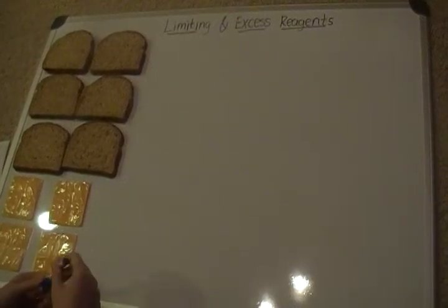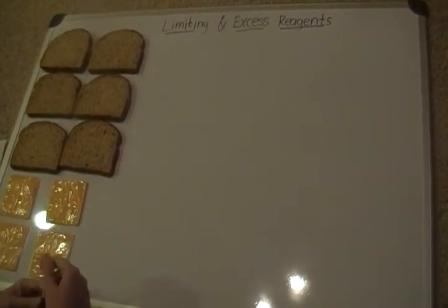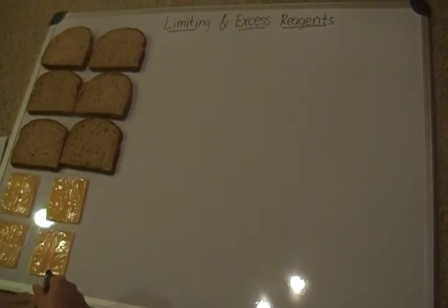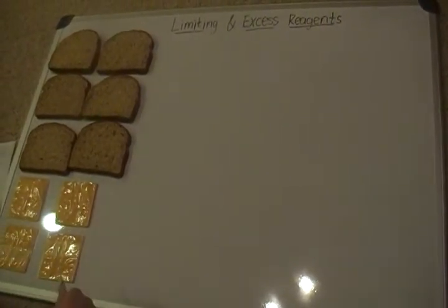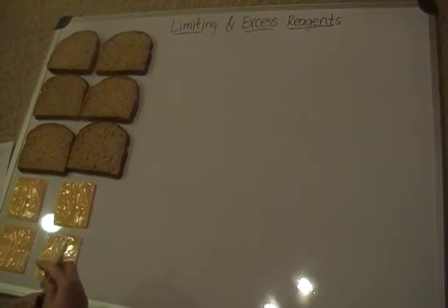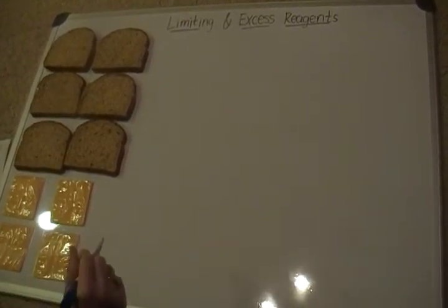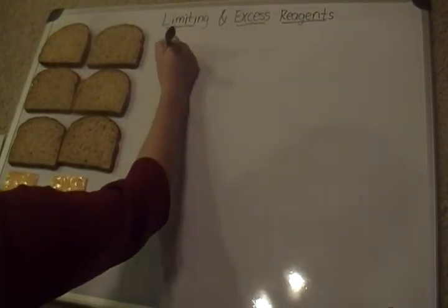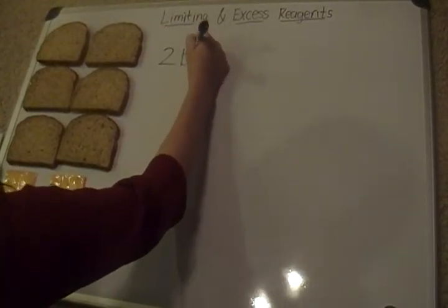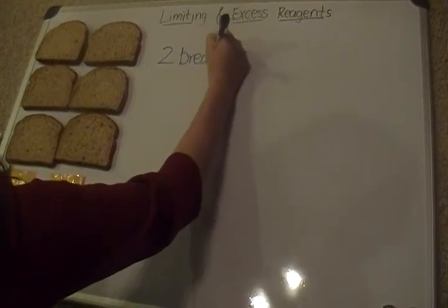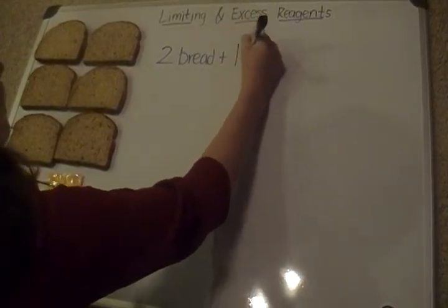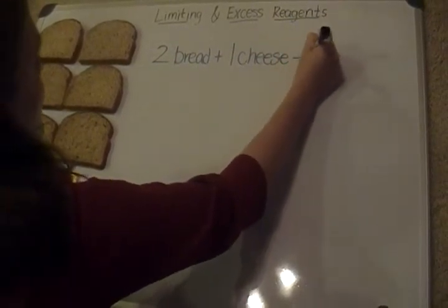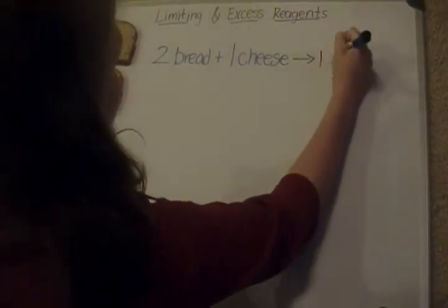We've been working through some stoichiometry calculations, and now we're going to talk about limiting and excess reagents. I'm going to use a very simple analogy of making cheese sandwiches. The first thing we need to do is write our chemical equation for how to make a cheese sandwich. A cheese sandwich is going to take two pieces of bread plus one slice of cheese, and that will yield us one sandwich.